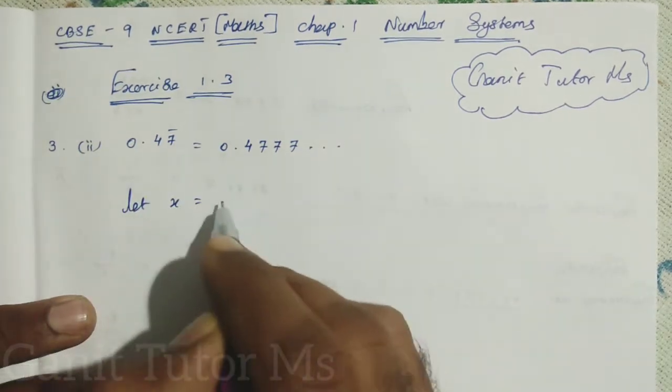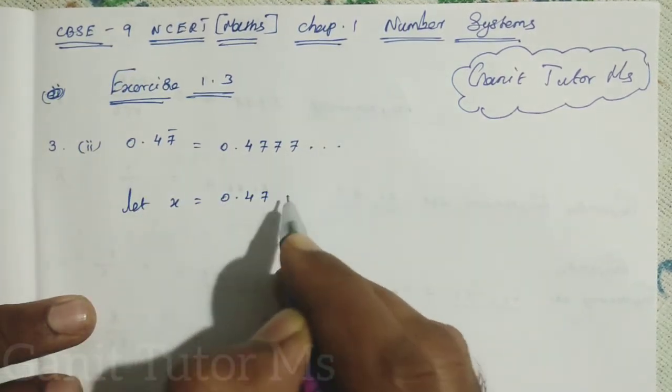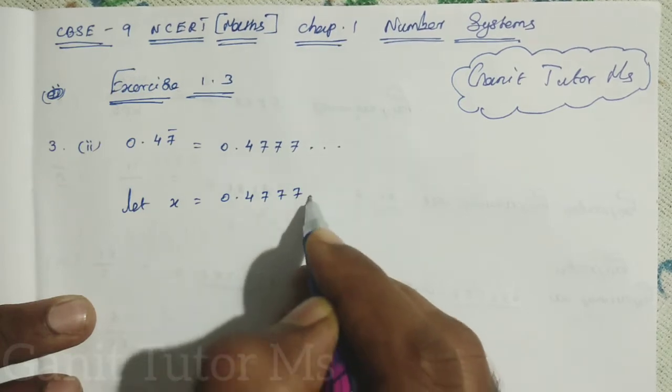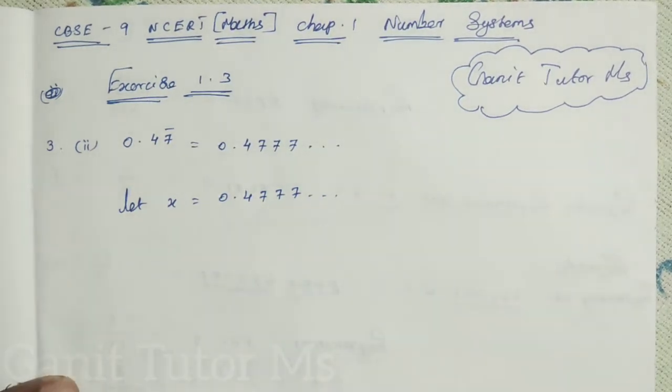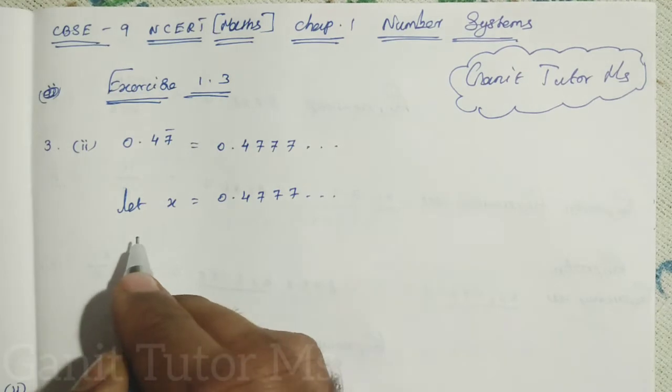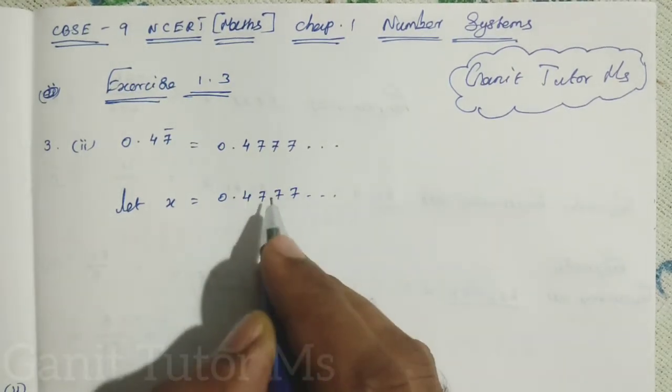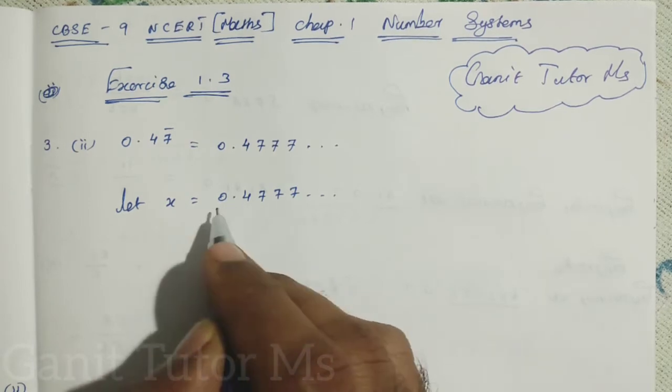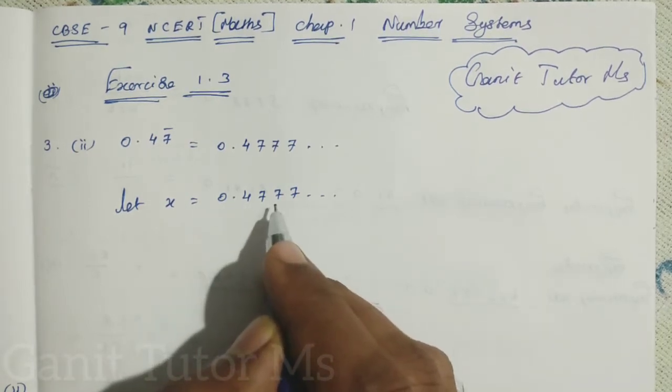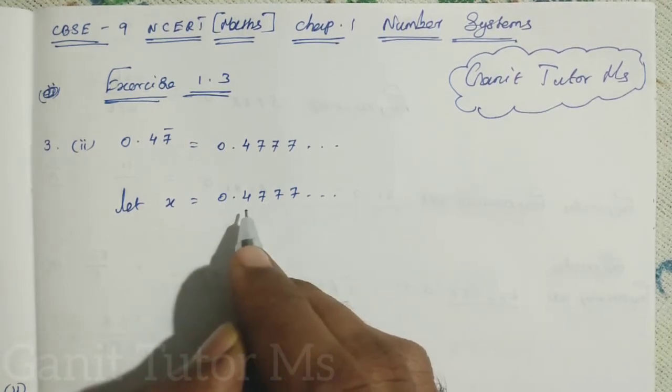We can write in a P by Q form. So very easy, let X is equal to 0.47777, etc. First you can take the given as an X value. Next, I am going to multiply 100 on both sides because I need 4 as well as 7 because 7 only repeating. I need 7 in front of the decimal.